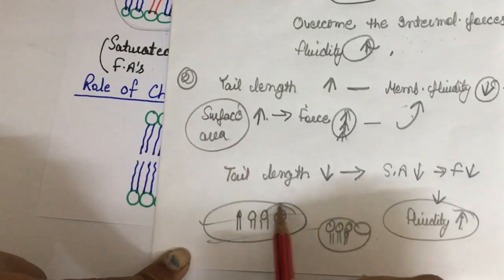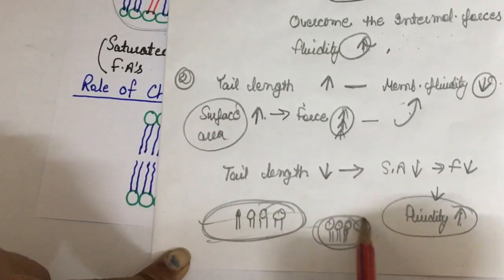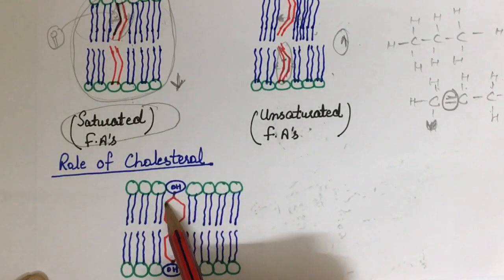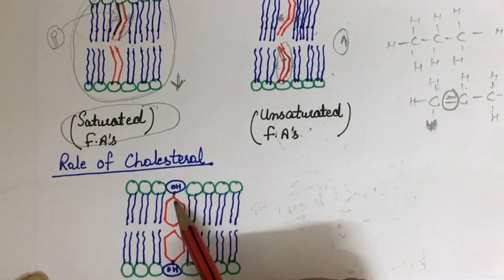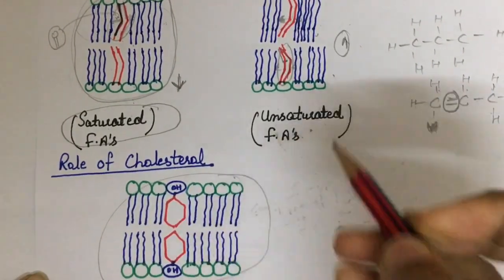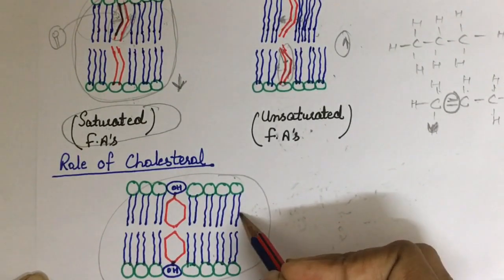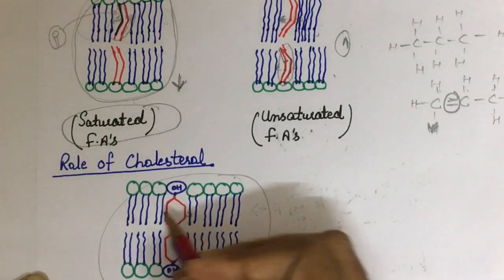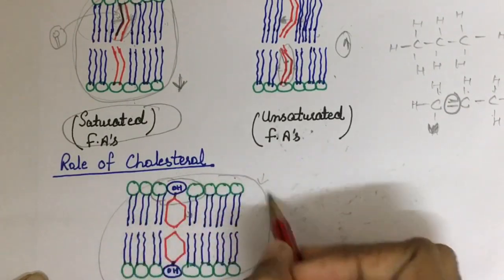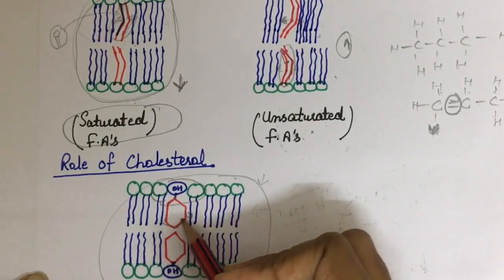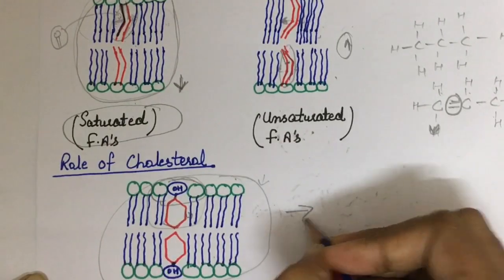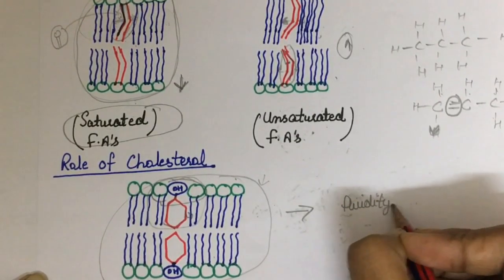Now the role of cholesterol: at low temperature, cholesterol gets inserted randomly in the phospholipid bilayer. Phospholipids tend to cluster, but when cholesterol is inserted, it increases the distance between phospholipids. Because of cholesterol's large ring structure, it increases the distance between two phospholipids, thereby increasing fluidity. Cholesterol basically acts as a buffer.